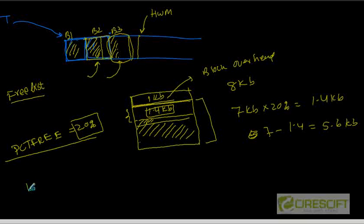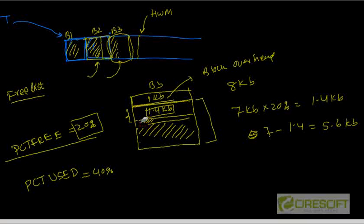Another parameter called PCT-used tells when this block will be a candidate for further insert. Let's take an example where PCT-used is 40 percent. Let's say this is block three and we are now deleting from block three, emptying the space. What this 40 percent is telling is that, as you empty — maybe the first time you are emptying two percent, three percent — as you keep deleting, this block is still not a candidate for further insert. It will be a candidate for further insert when only 40 percent of this block is used.